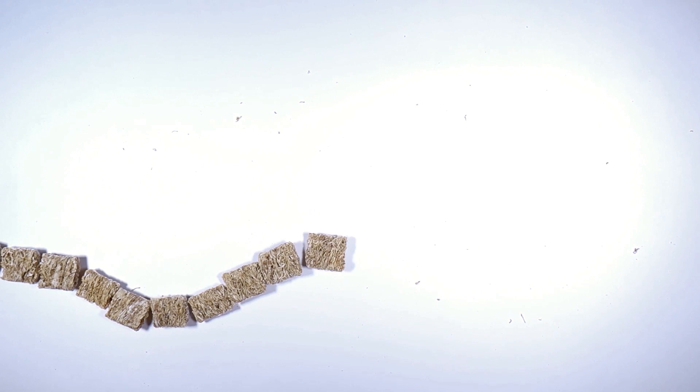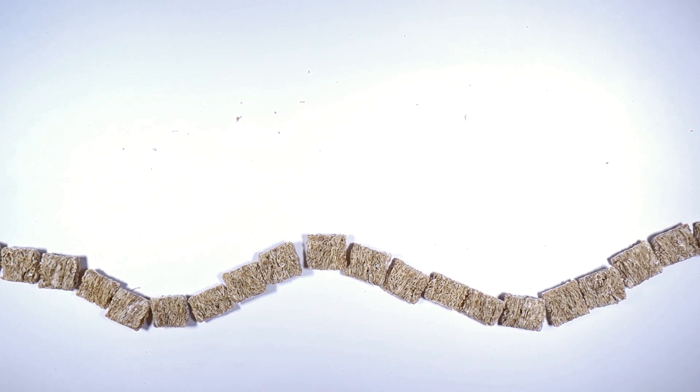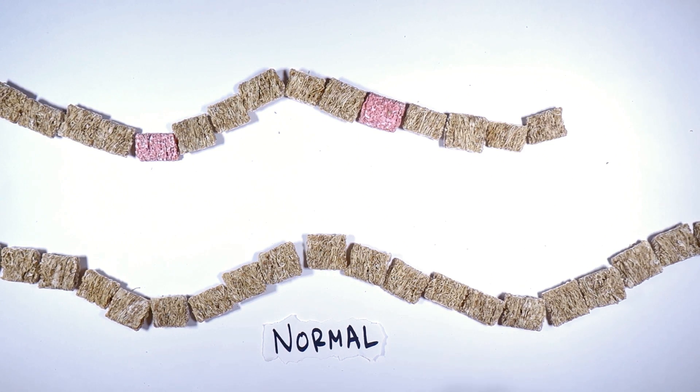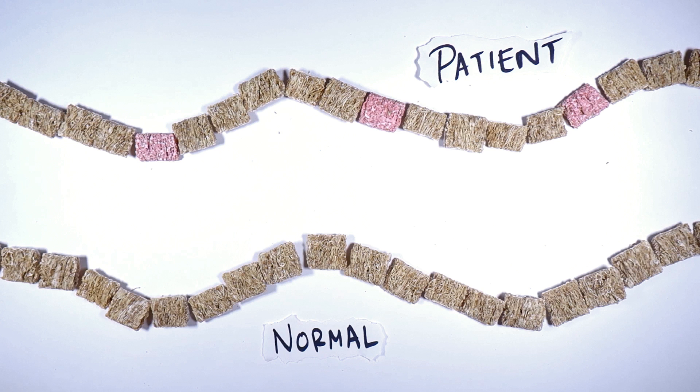So you take thousands, tens of thousands of patients and you take thousands of normal individuals and you just sequence their genomes. What kind of changes in the genome sequence more likely shows up in the patient than in the normal?